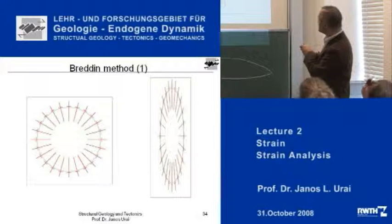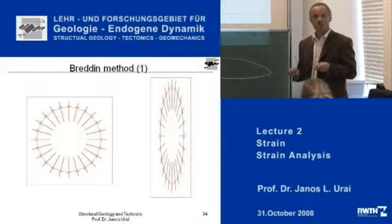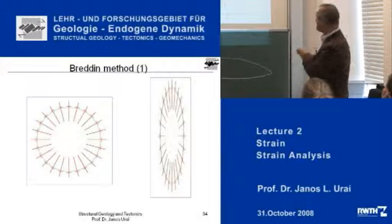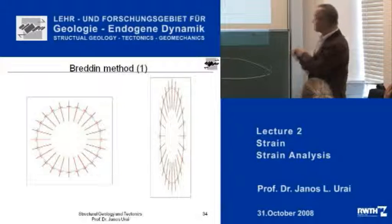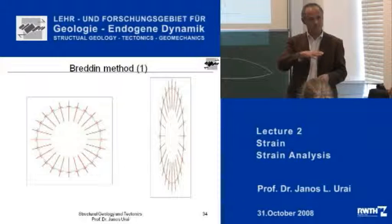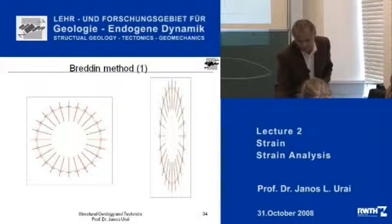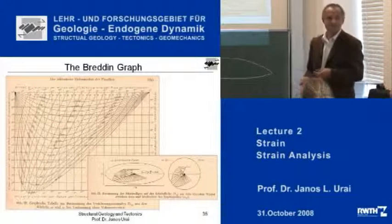You can see that this angle here is different from that one and different from that one. So if I would now go and measure the orientation of these lines — the symmetry axes — together with this shearing angle, then I'm going to get a curve. The orientation changes and the shearing angle goes up and then it goes back down to 90 degrees. And this is what Bredin made.